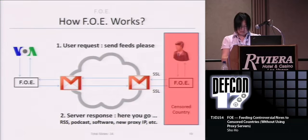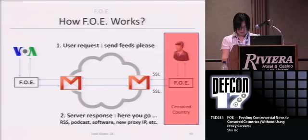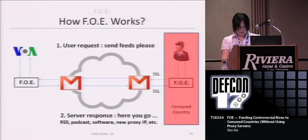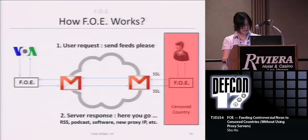When the FOA server, shown on the left side of the graph, receives the request, it will download the requested RSS feeds for the client and then email them back to the client's email address. When the client receives the reply message, it will verify the content and then display the feeds on the client's screen.